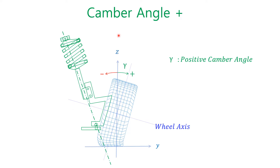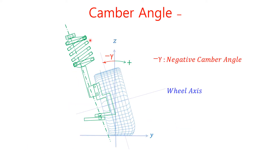This is the front view of the front left tire. Camber is the tilt angle of the wheel from the vertical axis. The wheel has a positive camber angle when the top of the wheel leans away from the vehicle longitudinal axis, like in this picture. The vehicle longitudinal axis is around here. On the other hand, the wheel has a negative camber angle when the top of the wheel leans inwards towards the vehicle longitudinal axis, like in this picture.